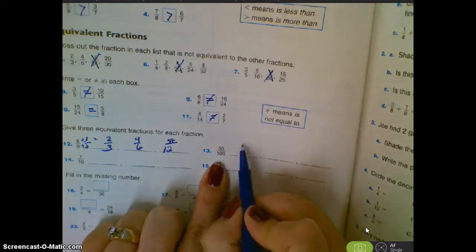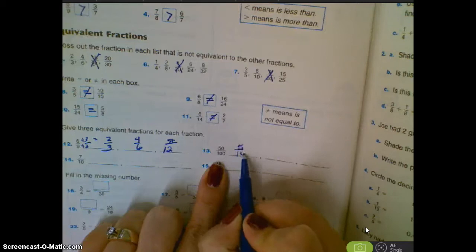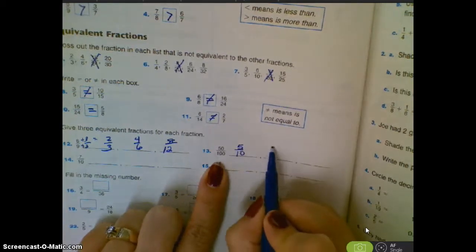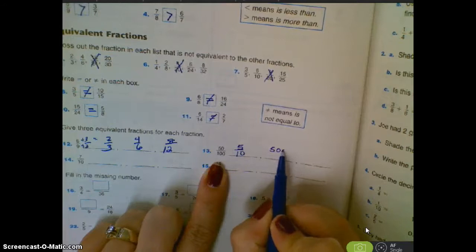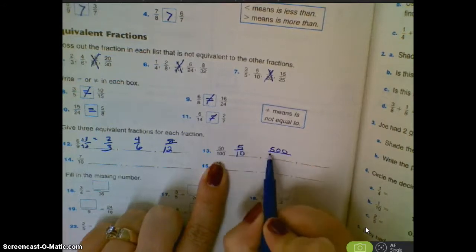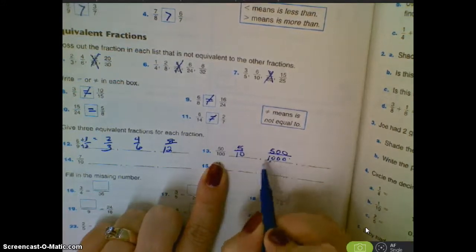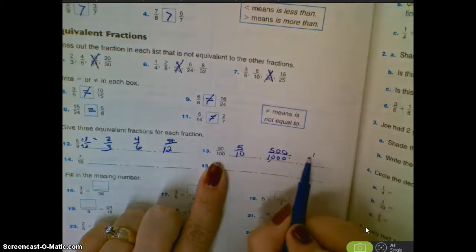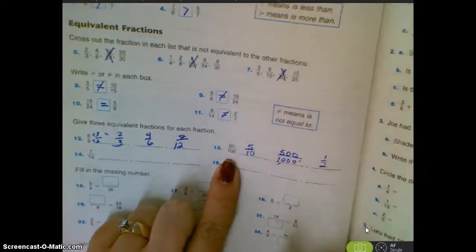This one, I could make smaller. I could go five over ten if I divided them both by ten. And I could call this five hundred over a thousand.